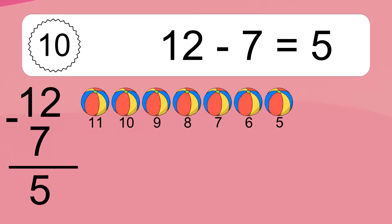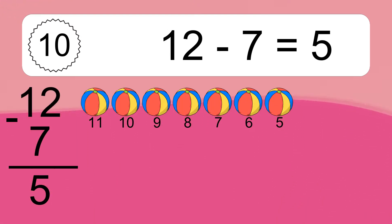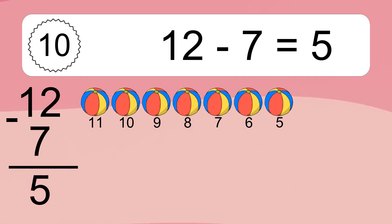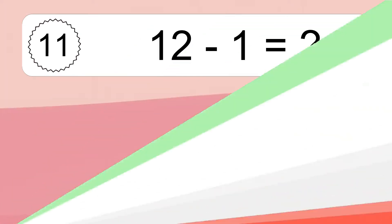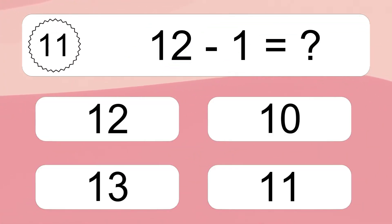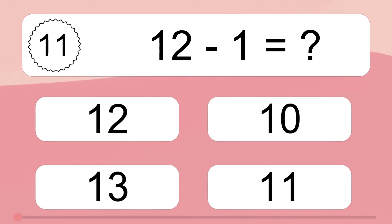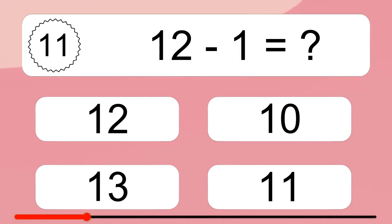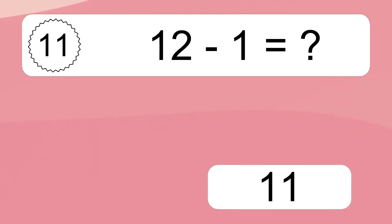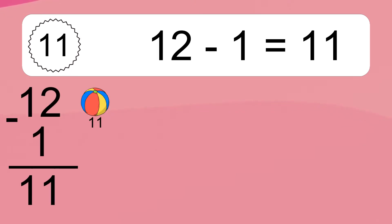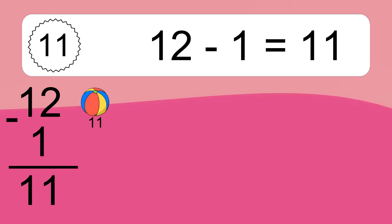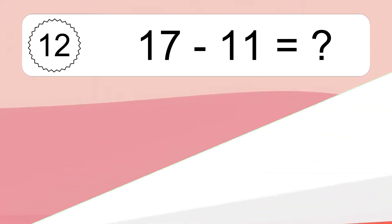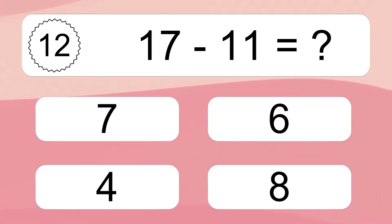12 minus 7 equals what? 12 minus 7 equals 5. Let's count it. 11, 10, 9, 8, 7, 6, 5. 12 minus 1 equals what? 12 minus 1 equals 11. Let's count it. 11.